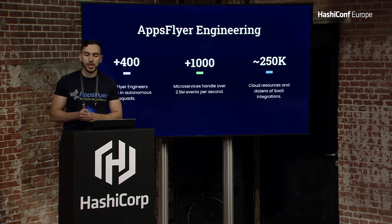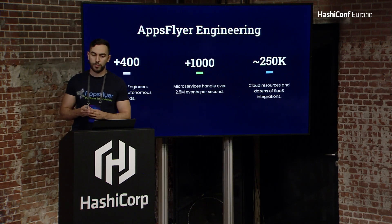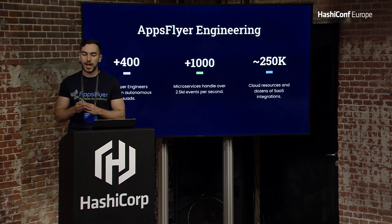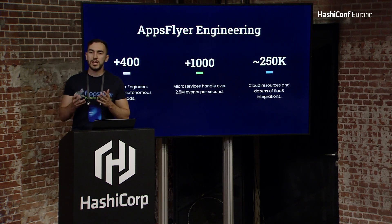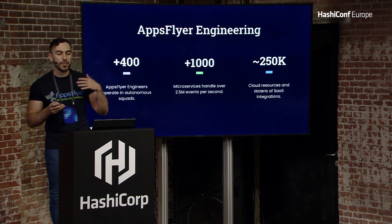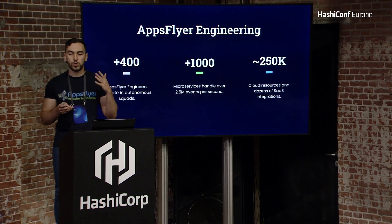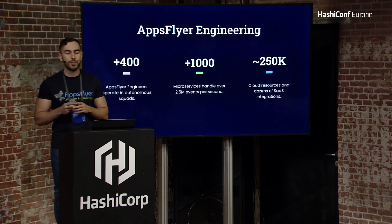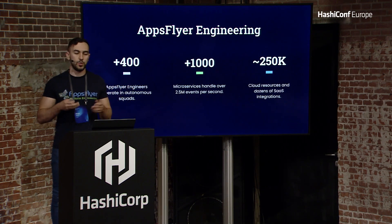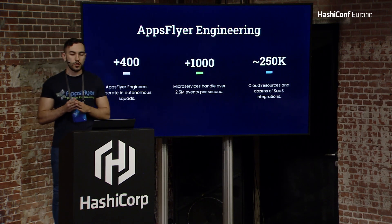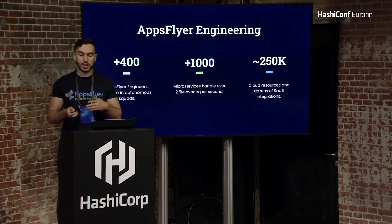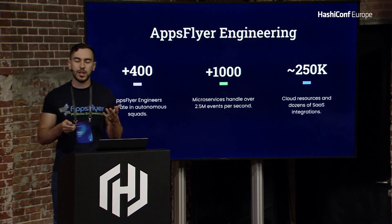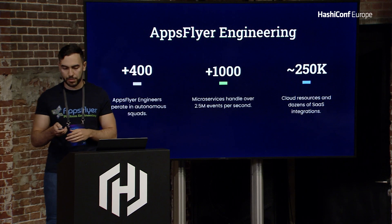AppsFlyer is a mobile attribution and marketing analytics platform. The engineering team has grown exponentially and has more than 400 engineers. We operate in squads, meaning each team has full autonomy. We have one thousand microservices that handle more than 2.5 million events per second. The architecture operates thousands of resources, from EC2 instances to EKS clusters, and we use a lot of SaaS integrations such as PagerDuty and Datadog.